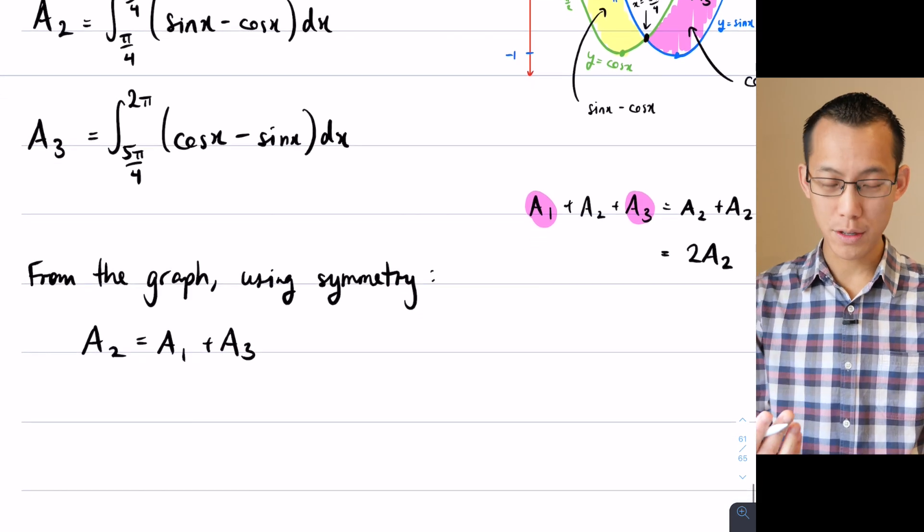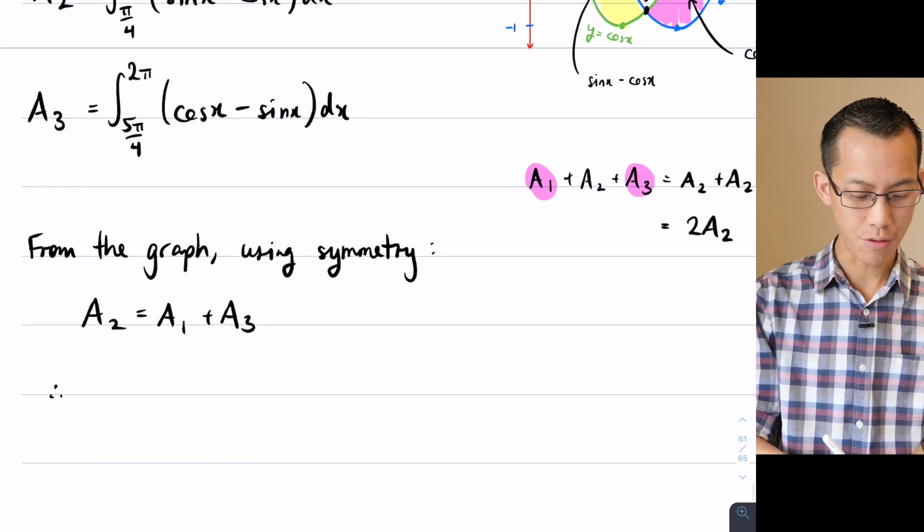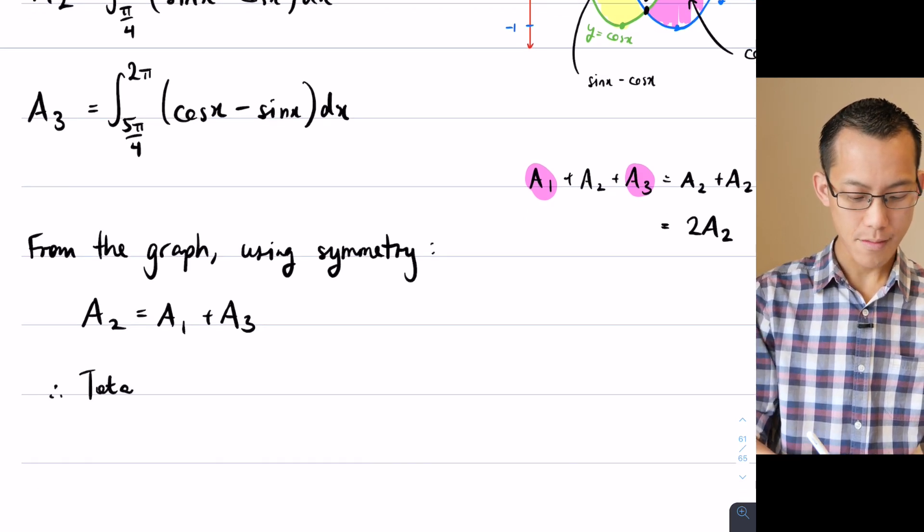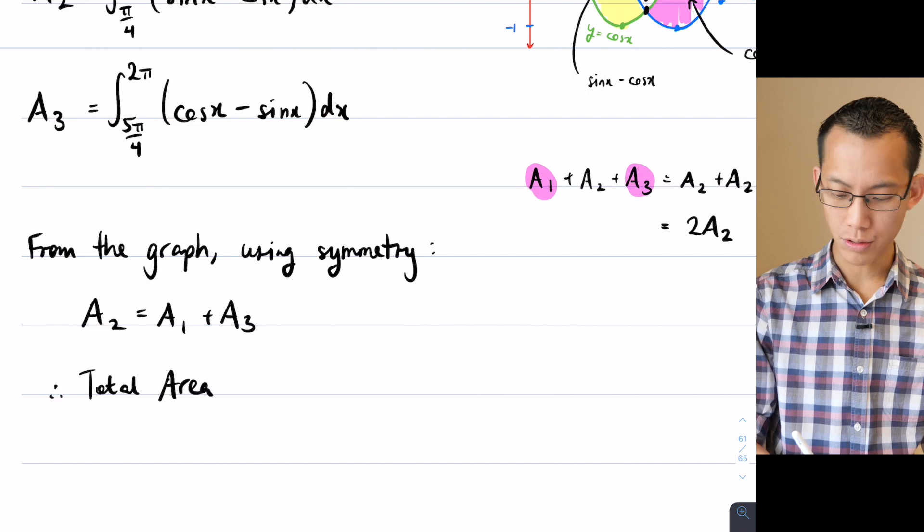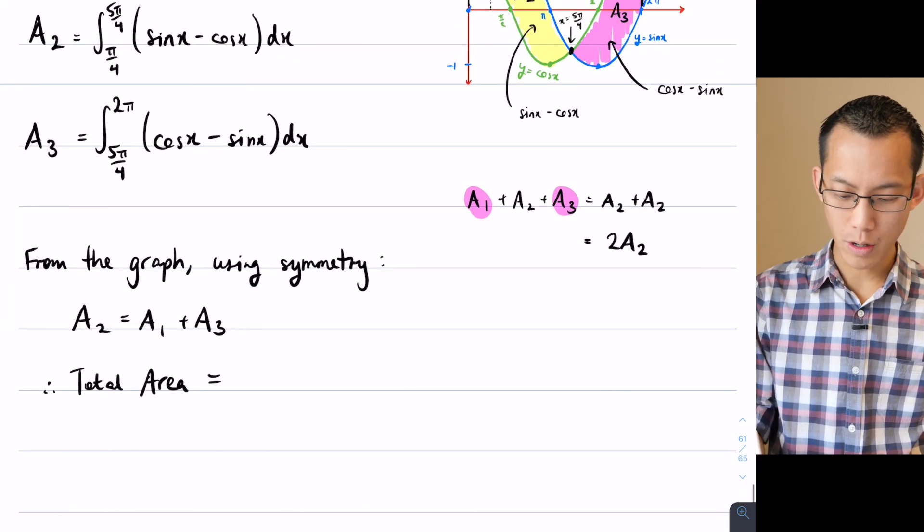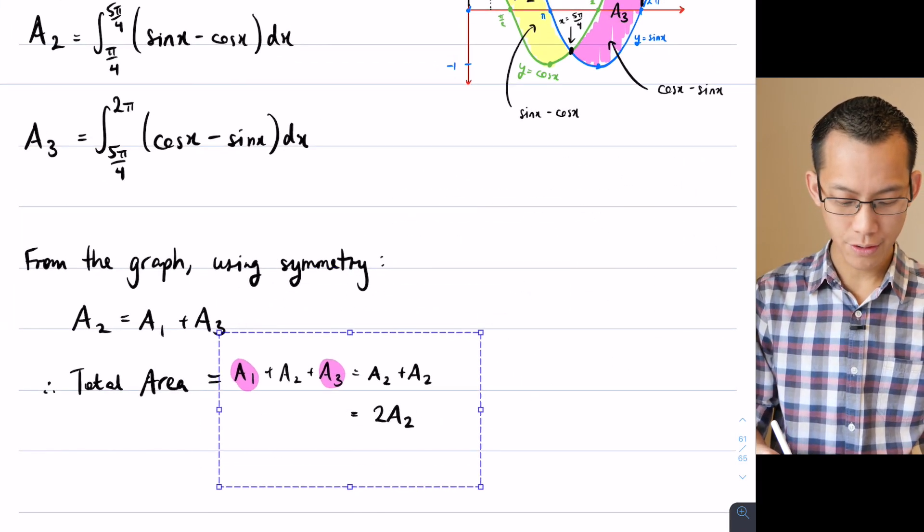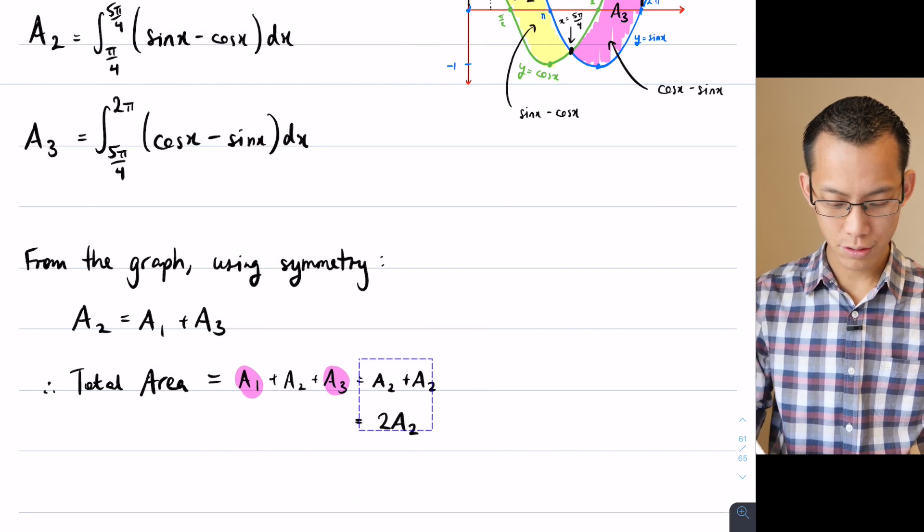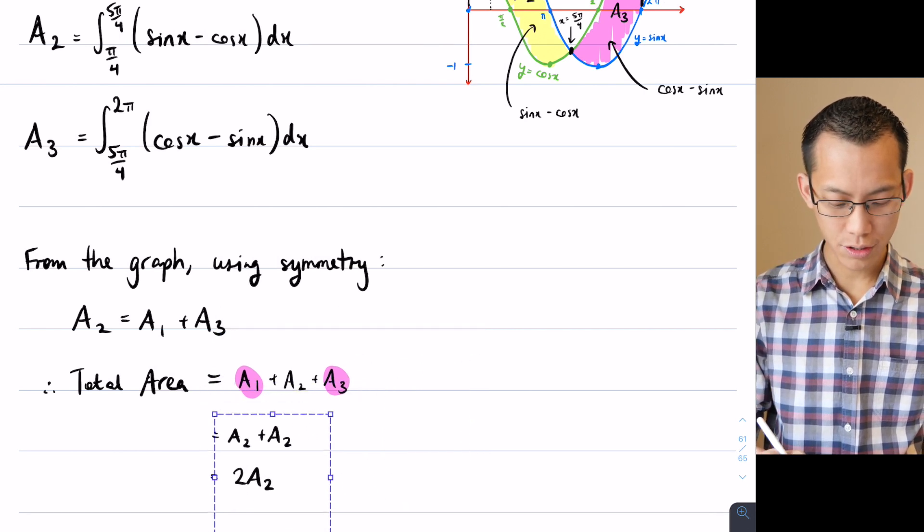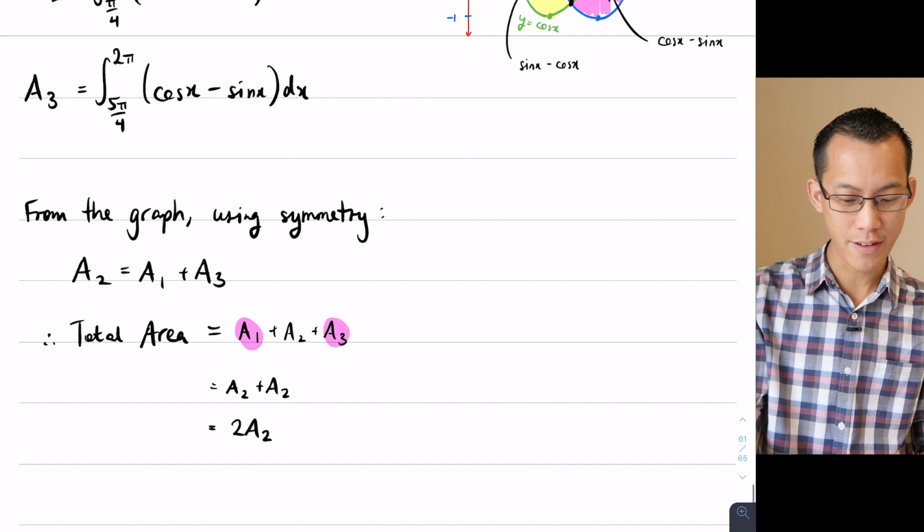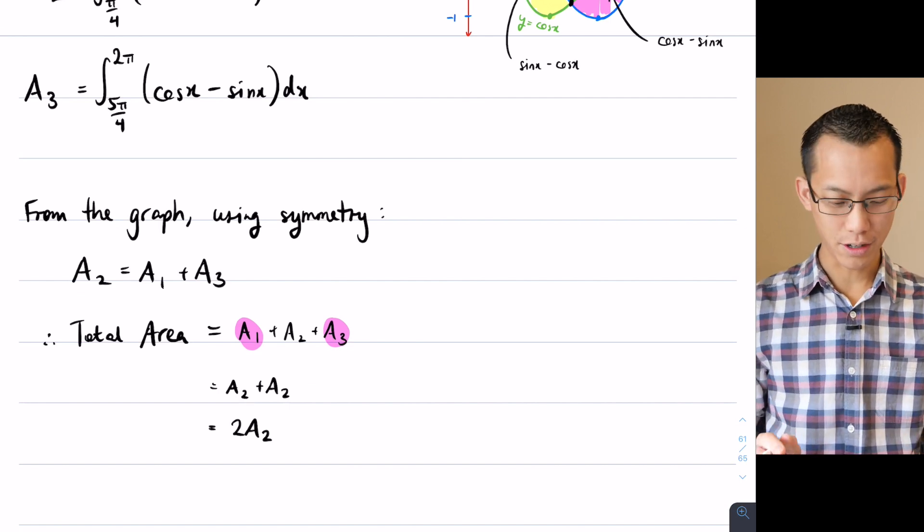So I can use this enormous shortcut to then say, therefore, the total area is going to be equal to, and I'm just going to bring this working out from over here. Total area is two lots of A2.